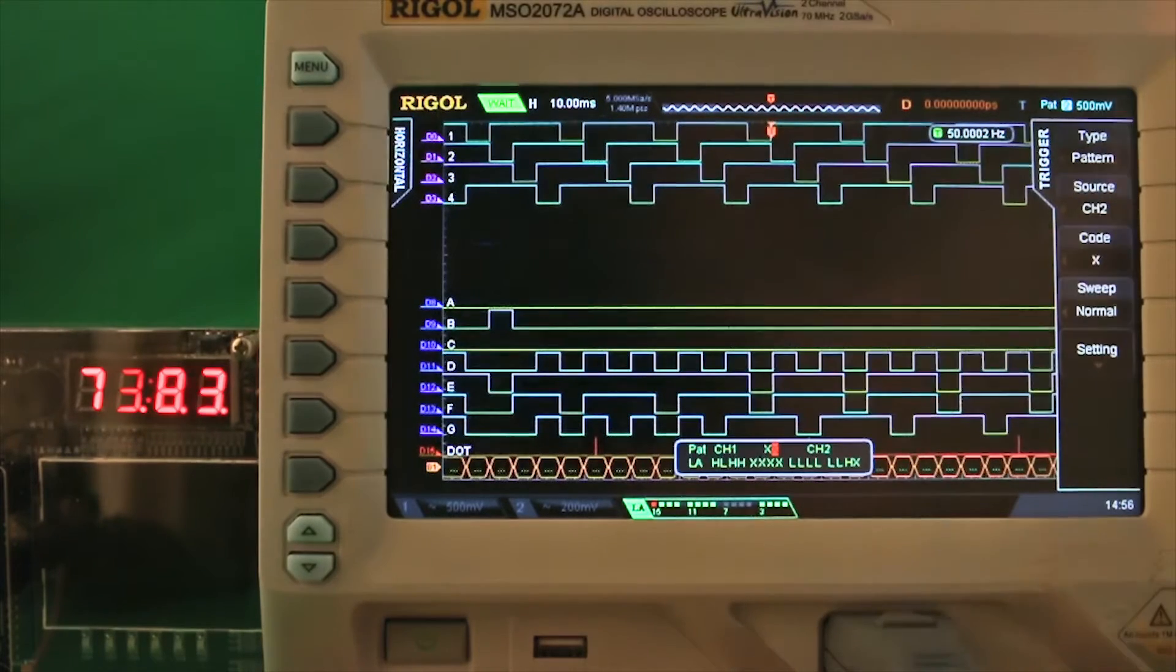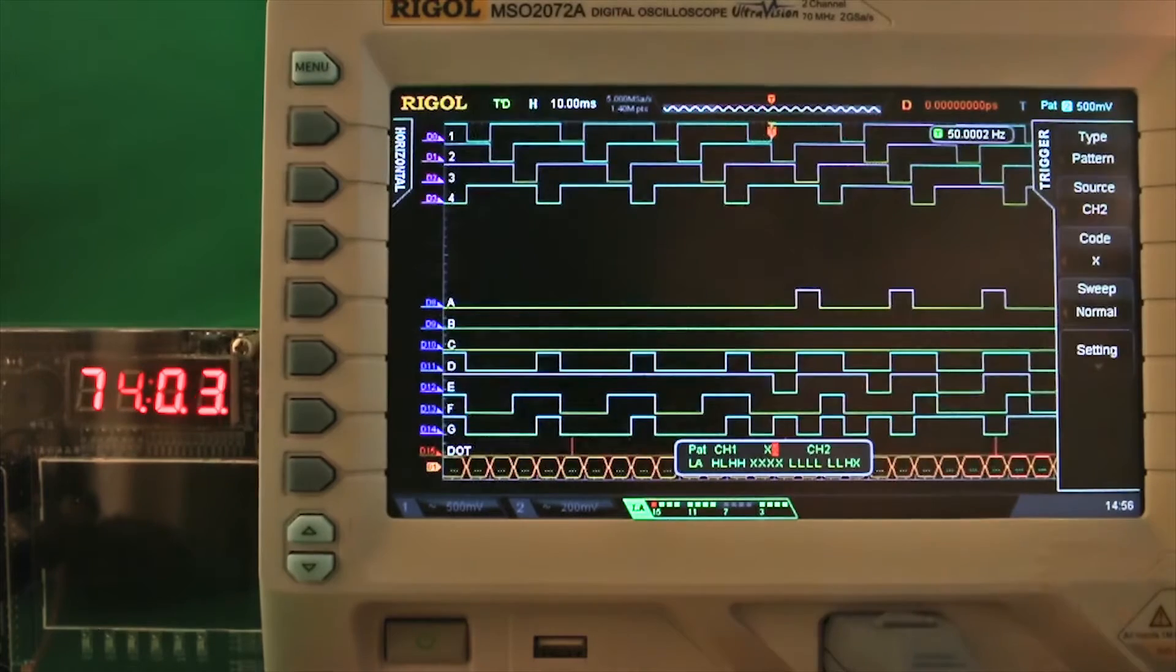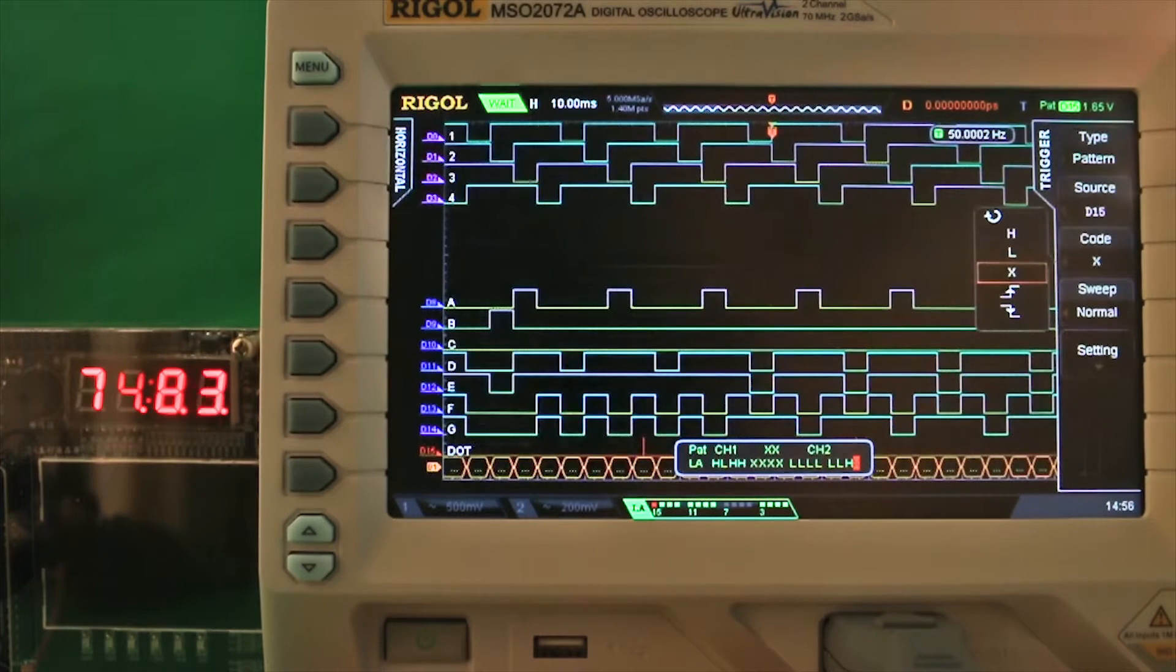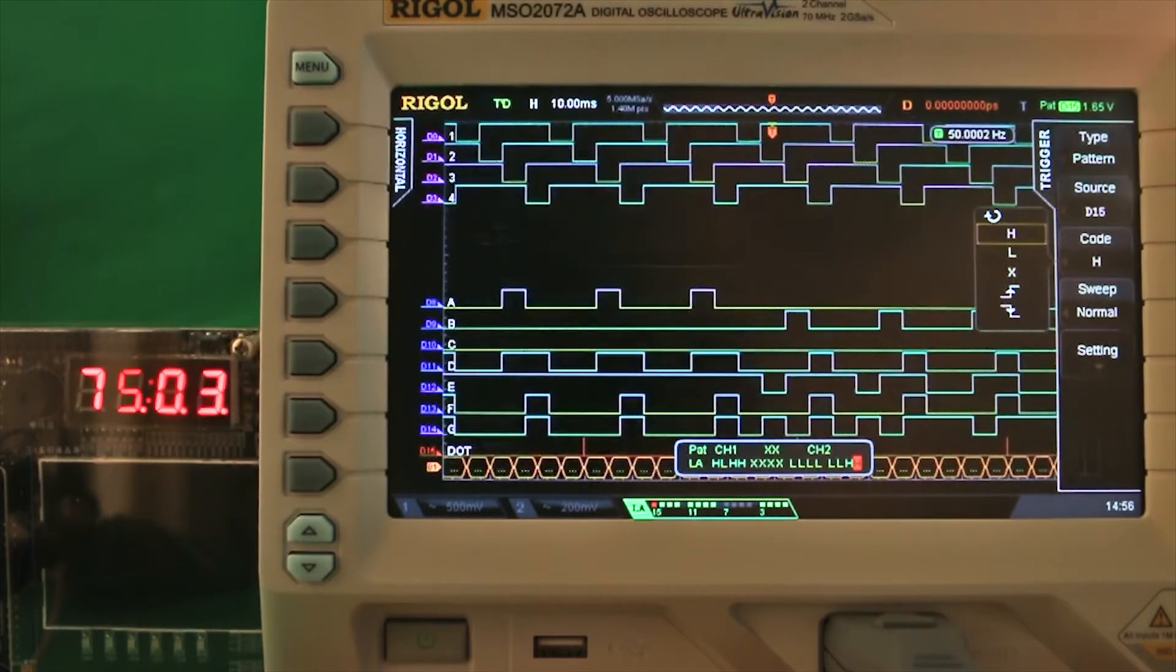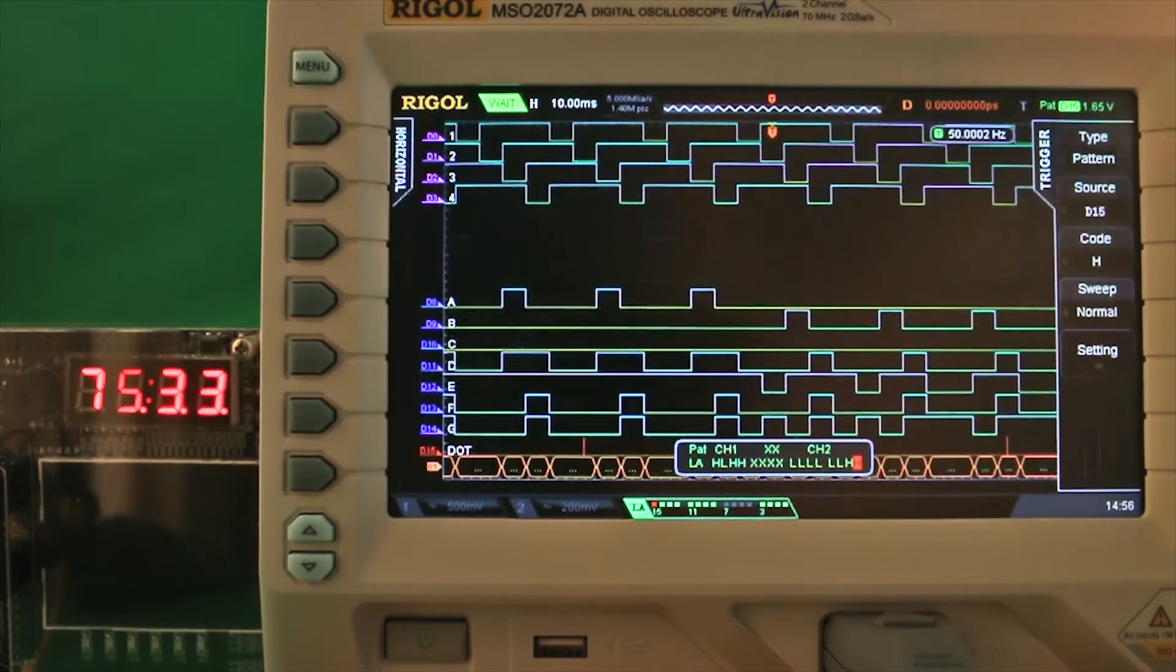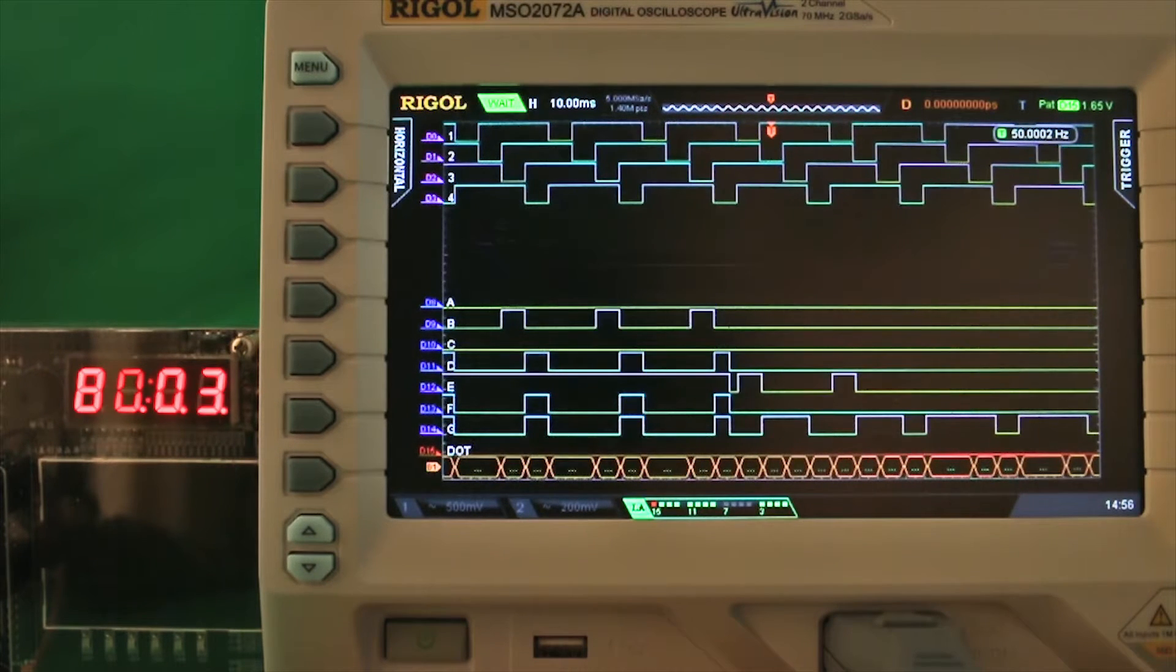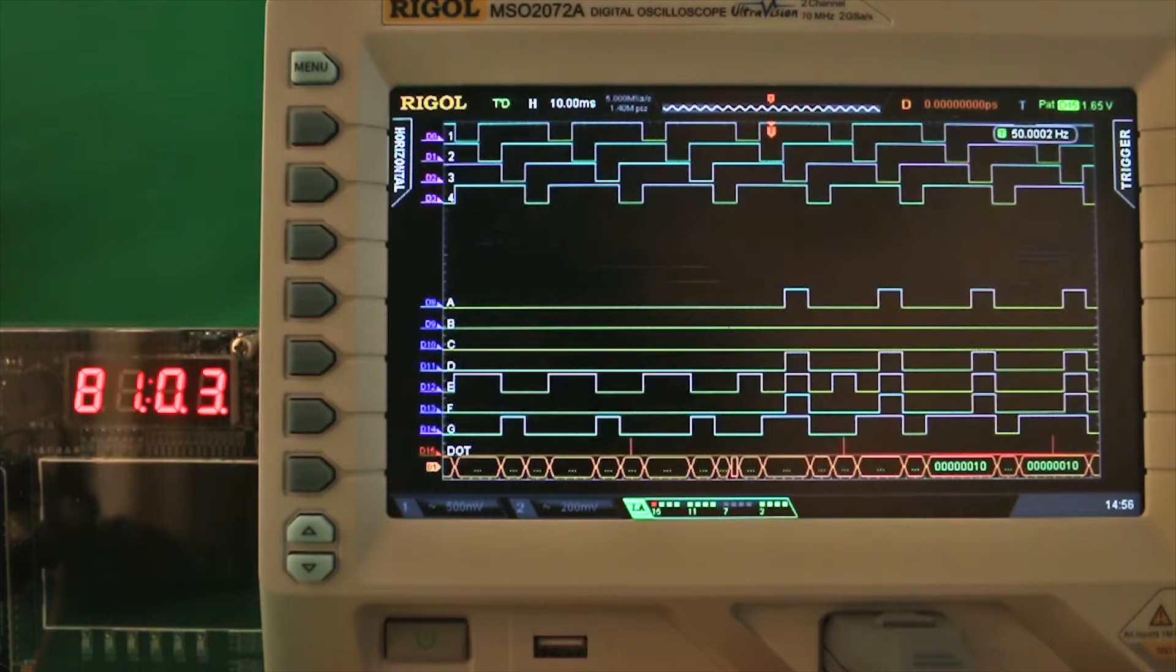So if you go to pattern again, and we say I have now D15, and D15 should be now high. So if I put it on high, now it will only trigger on a zero. Like that. You see, that's perfect. Just the way I want it. But normally with a 7-segment control you don't have a clock, because the 7-segments don't need a clock. So what's going on?